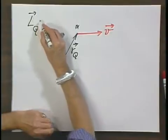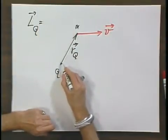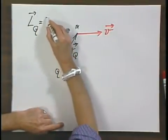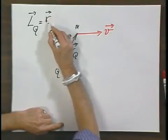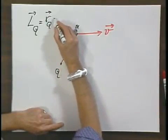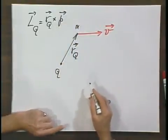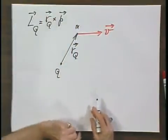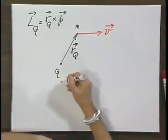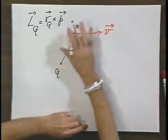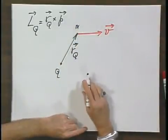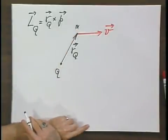L of Q, the angular momentum relative to point Q, is defined as the position vector relative to point Q cross P. Notice that this vector is very different if you choose different points of Q. But I'm not going to address that issue now. You will see that somewhere else in this course.